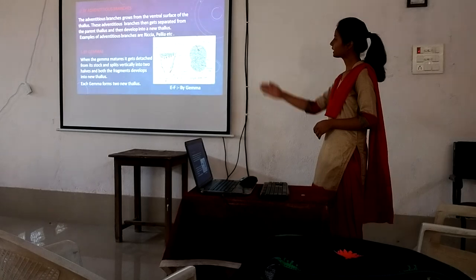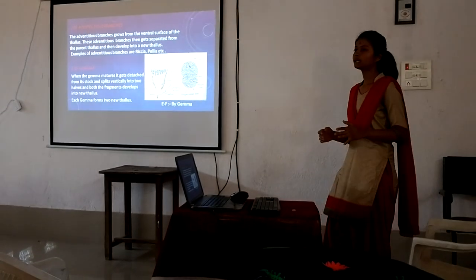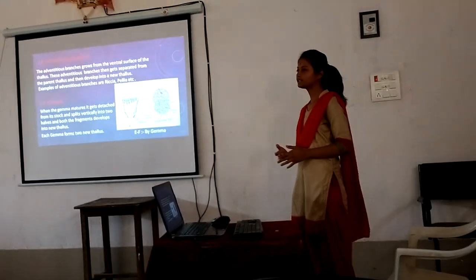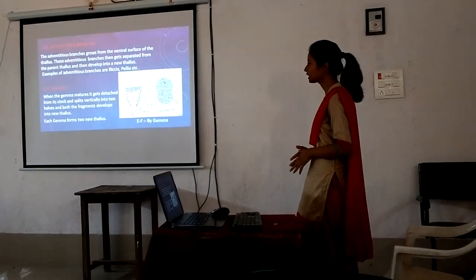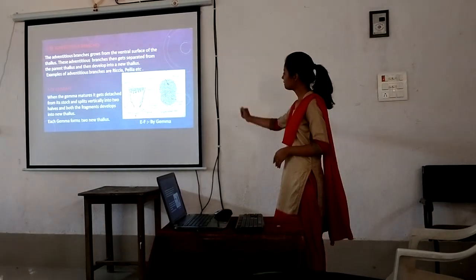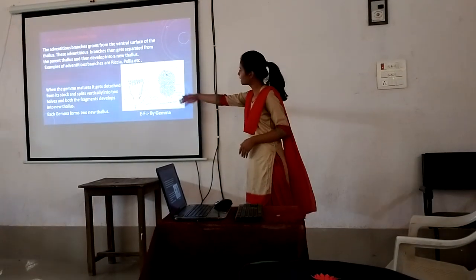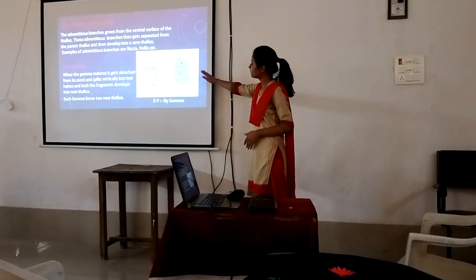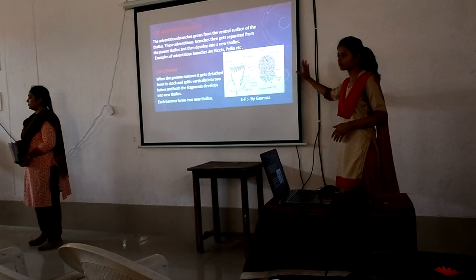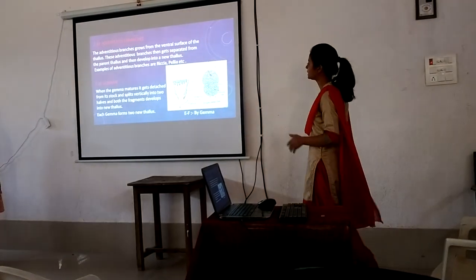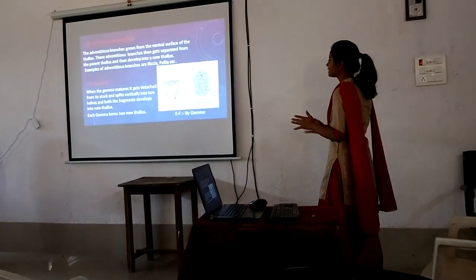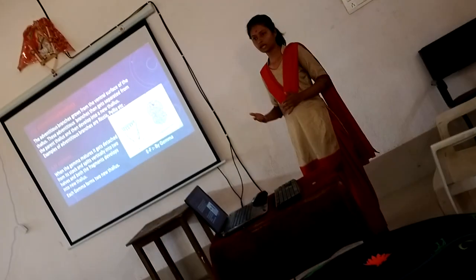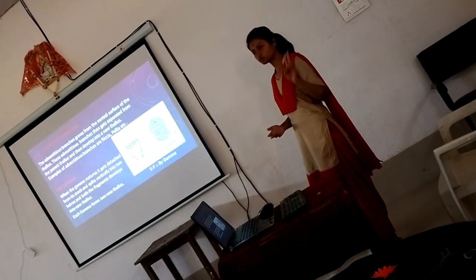The third method is by gemmae. Gemmae are green, bilobed, multicellular, single-stalked structures that play the main role in vegetative propagation in Bryophytes. We can see from the diagram the gemma cup, which contains many gemmae. When a gemma matures, it gets detached from its stalk and splits vertically into two halves, and both fragments may develop into a new thallus. Each gemma thus produces two new thalli.